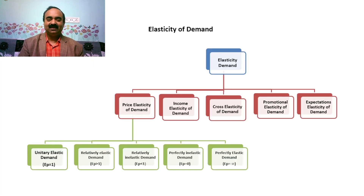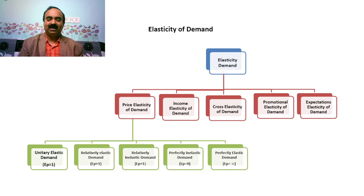Dear students, in this diagram I have explained the different types of elasticity of demand. Elasticity of demand can be divided into five types. They are: 1. Price elasticity of demand. 2. Income elasticity of demand. 3. Cross-elasticity of demand. 4. Promotional elasticity of demand. 5. Expectations elasticity of demand. Now let us discuss one after the other.